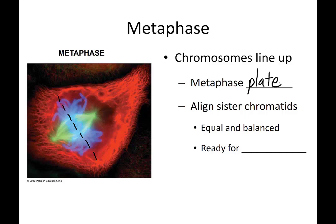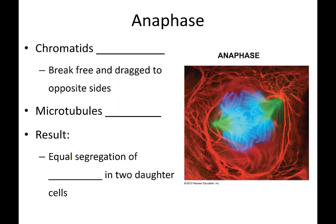The chromosomes line up on the metaphase plate during metaphase. The two halves of the duplicated chromosomes — the sister chromatids — are equal and balanced, and they're ready for segregation, or separation into two equal parts. That happens in the next part of mitosis, known as anaphase. During anaphase, the sister chromatids separate; they break free and are dragged to opposite sides of the cell.